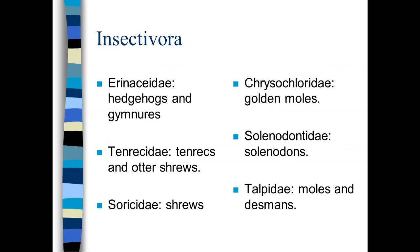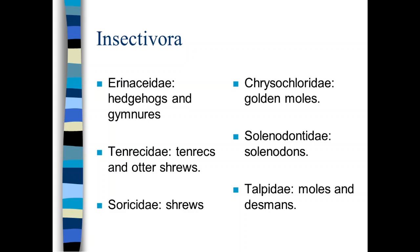So let's begin looking at the Insectivora. Remember, there are four orders, and the first order we're going to look at are the Insectivora. These include the Erinaceidae, those are the hedgehogs and the gymnures, the Tenrecidae, which are the tenrecs and the otter shrews, the Soricidae, which are the shrews, the Chrysochloridae, which are the golden moles, the Solenodontidae, which are the solenodons, and then the Talpidae, which are the moles and the desmans.